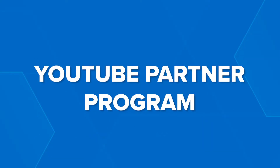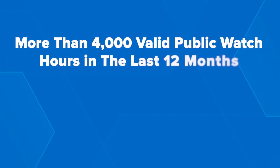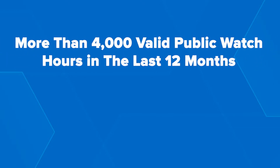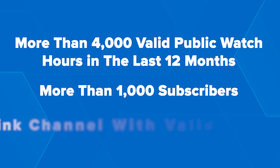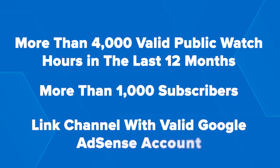YouTube Partner Program. To start using Google AdSense for your YouTube videos, you need to join the YouTube Partner Program. You must live in a country where the YouTube Partner Program is available. Your channel must have more than 4,000 valid public watch hours in the last 12 months, more than 1,000 subscribers, and you must link your channel with a valid Google AdSense account.